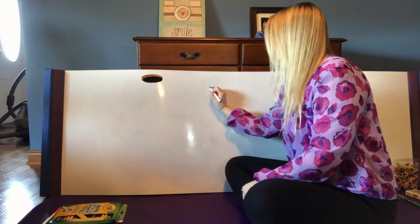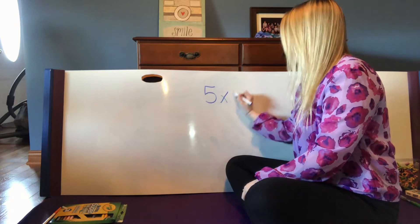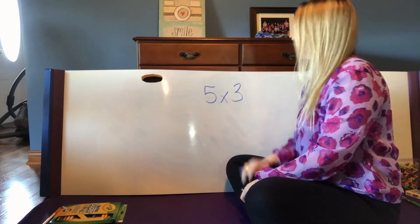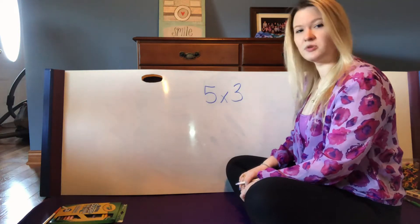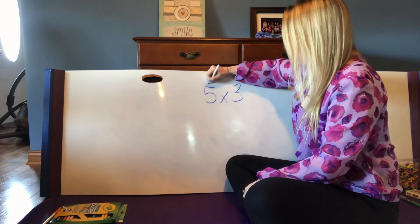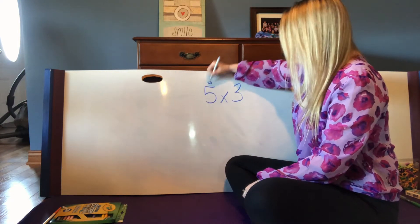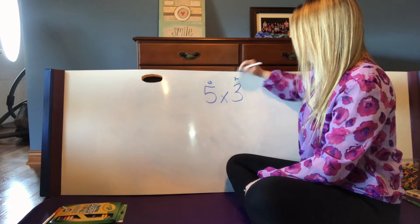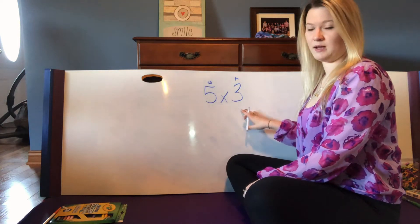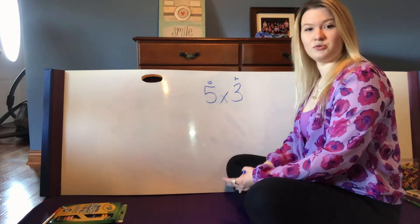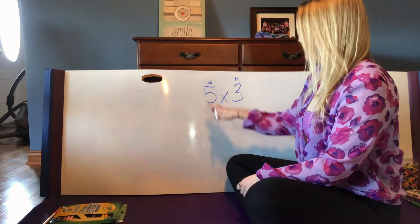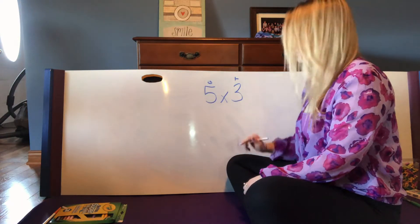So let's try 5 times 3. When we look at this, it's really important to remember that means we have 5 groups with 3 things in them. So 5 groups of 3. If I'm going to change this into repeated addition, that means I need to have 5 threes. So it'll look like this.